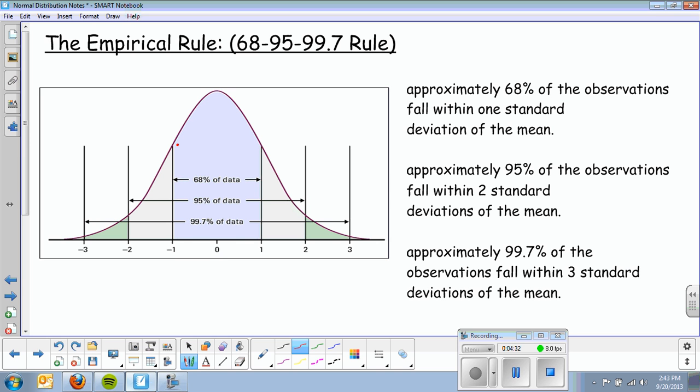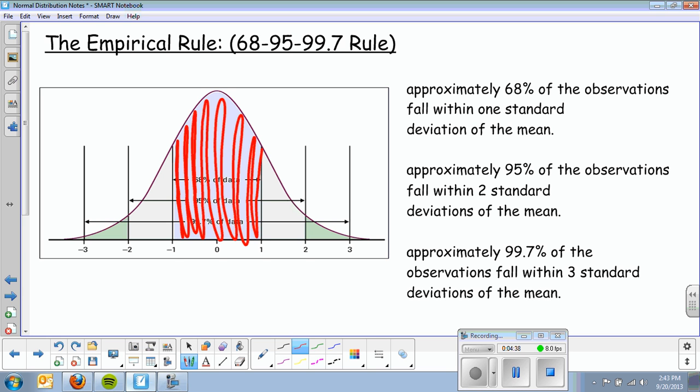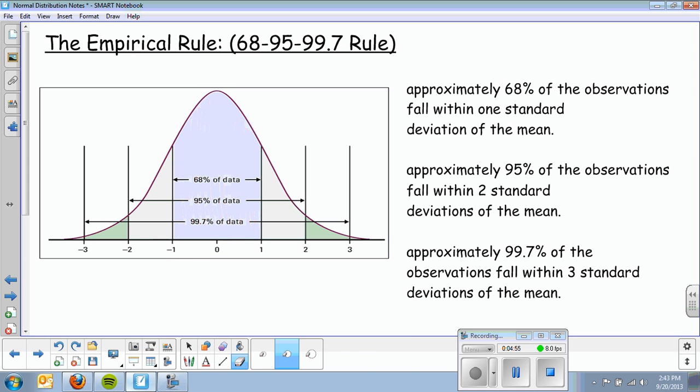The basic rule is that if I branch out one standard deviation from the mean, that's up one and down one. That area under the curve, and I'll shade it so you can visualize it, this area here represents approximately 68% of the observations. So 68% of the observations are one standard deviation above and below the mean, and you can see that in the graph.